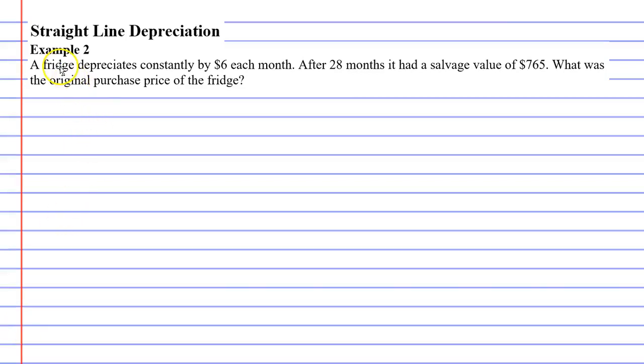Example 2, this time it's a fridge which is depreciating constantly by $6 each month. So we're going to put the letter D there or the pronumeral D, that's the depreciation of 6.